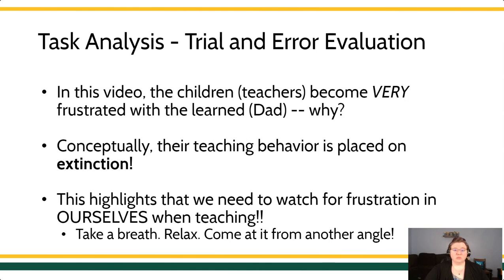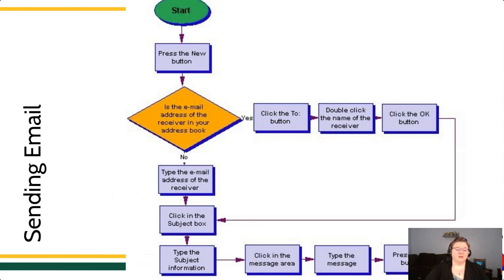I mean, think about something as simple as sending an email. Here is one flow chart of what it takes to send a response. I mean, look at this. You have to start whatever your processor, your email program is. You press a new button. Then you have to figure out, is the person in your address book? And then yes, if they are, then click the two and so on and so forth. This complex kind of flow chart shows you the many small pieces that can be in the task analysis of a behavior that we all kind of take for granted that we do every day.